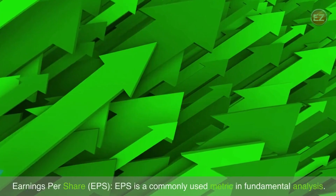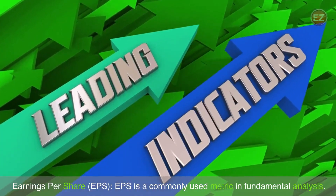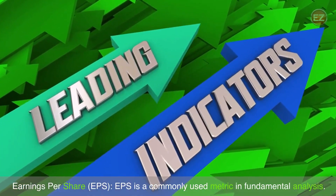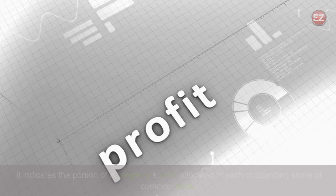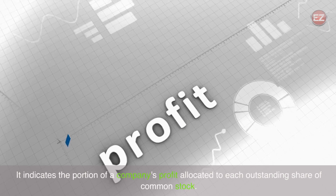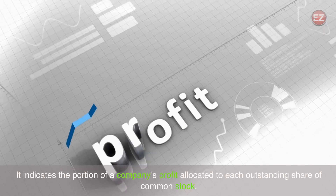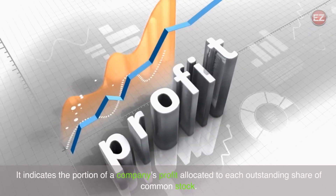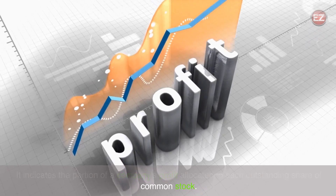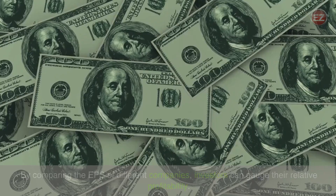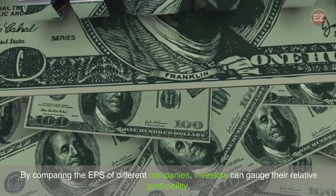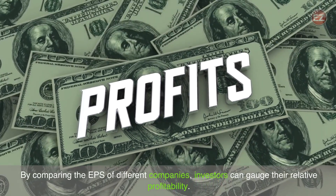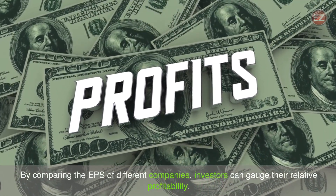Earnings Per Share (EPS) is a commonly used metric in fundamental analysis. It indicates the portion of a company's profit allocated to each outstanding share of common stock. By comparing the EPS of different companies, investors can gauge their relative profitability.